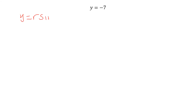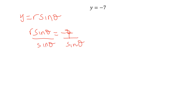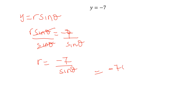The second example is y = −7. We know y equals r sin theta, so substituting gives r sin theta = −7. To isolate r, we divide both sides by sin theta, giving r = −7/sin theta, which can also be written as r equals negative 7 cosecant theta.